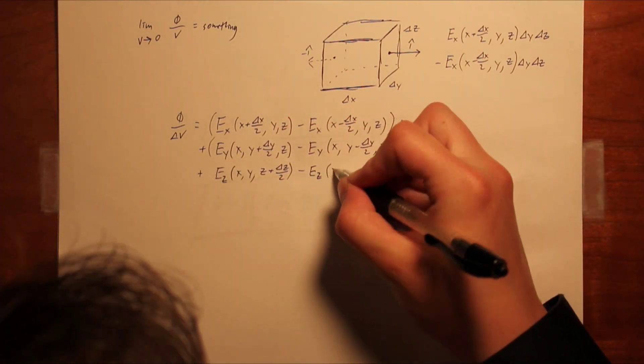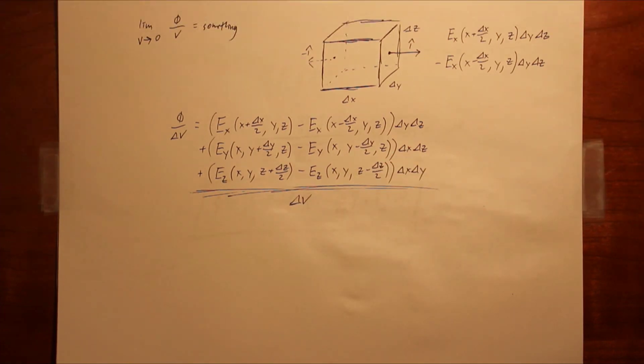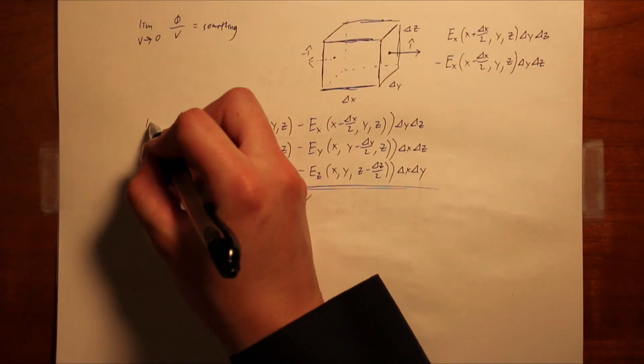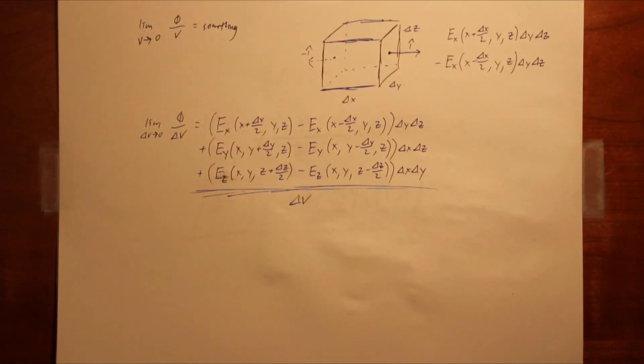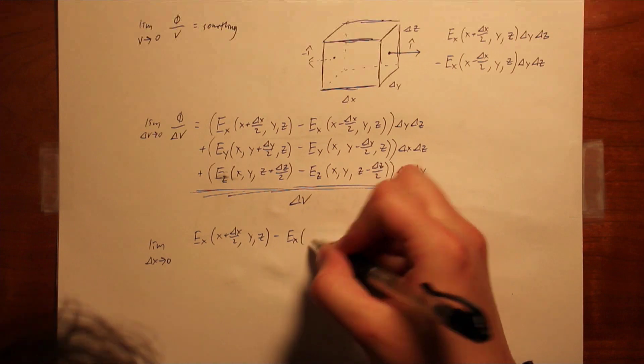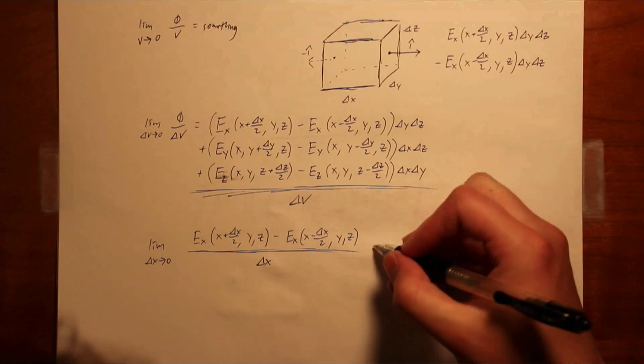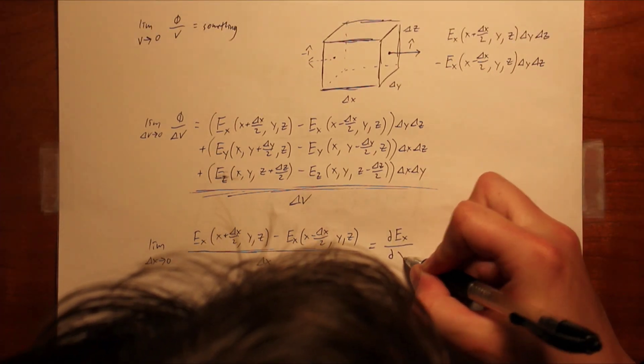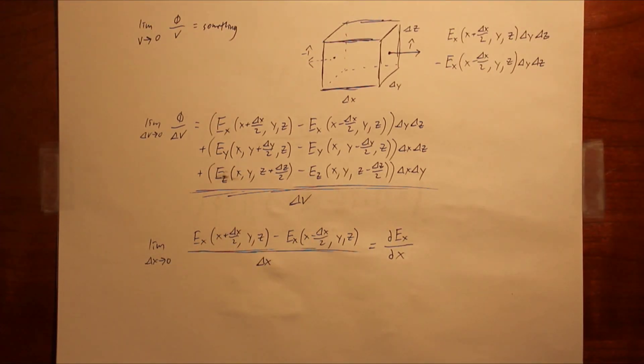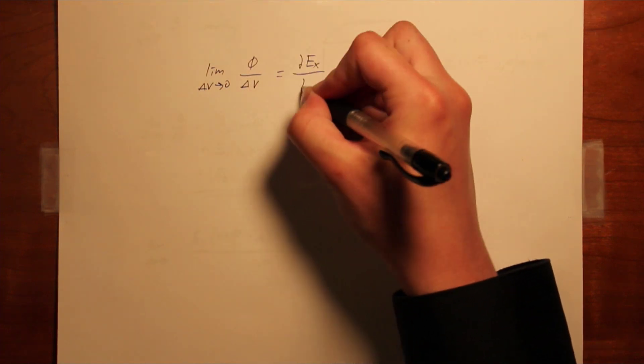To get the flux per volume, we divide by delta v, which is delta x times delta y times delta z, and we then take the limit as dx, dy, and dz go to zero. Consider a single one of the terms in this hideous expression separately, with its relevant limit. This might seem a little familiar, and well it should, as it is equivalent to the limit definition of the partial derivative, which is unsurprisingly very similar to the limit definition of the regular derivative. We can thus rewrite the flux per volume as the sum of three partial derivatives.